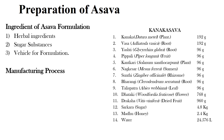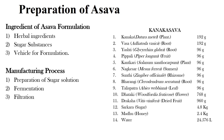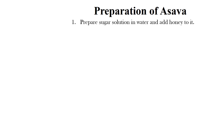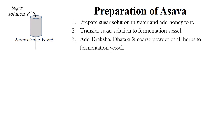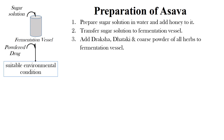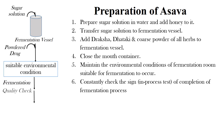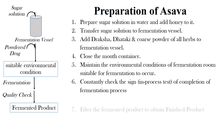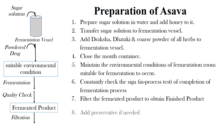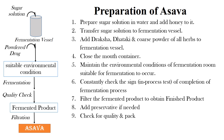The manufacturing process of Asava includes three major steps: preparation of sugar solution, fermentation process, and final filtration. To prepare Asava, prepare a sugar solution in water and add honey and jaggery to it. Transfer the solution to a fermentation vessel. Add Drakscha, Dhataki, and coarse powder of all herbs to the fermentation vessel. Close the mouth of the container and maintain the environmental conditions of the fermentation room suitable for fermentation to occur. Constantly check for signs of completion of fermentation. When fermentation is complete, filter the fermented product to obtain the finished product. Add preservatives if needed, check for quality, and pack.